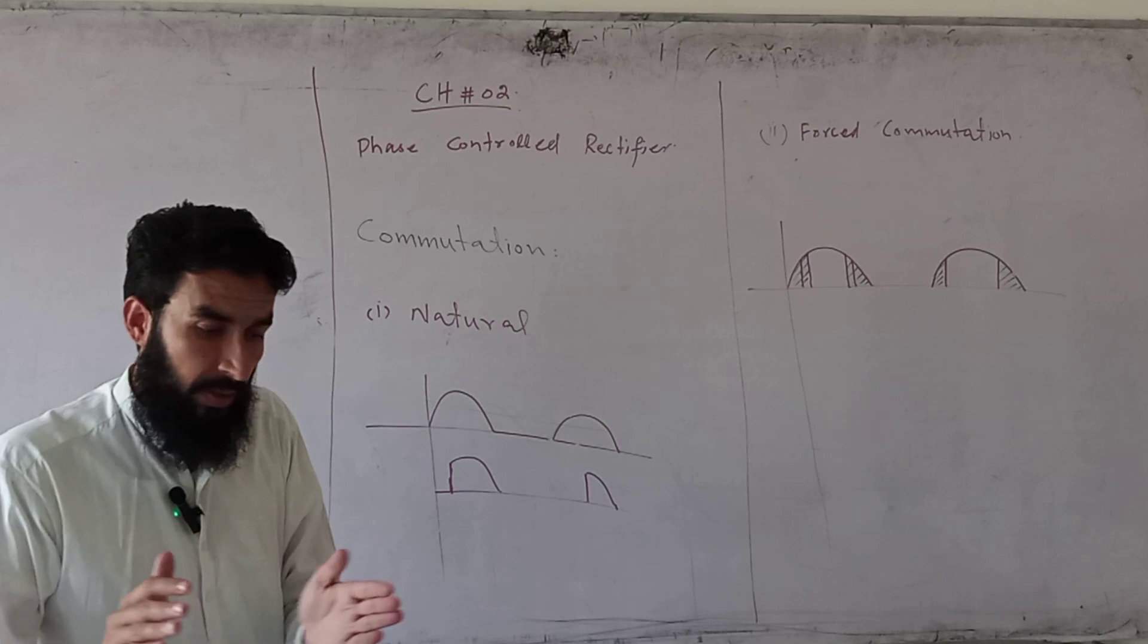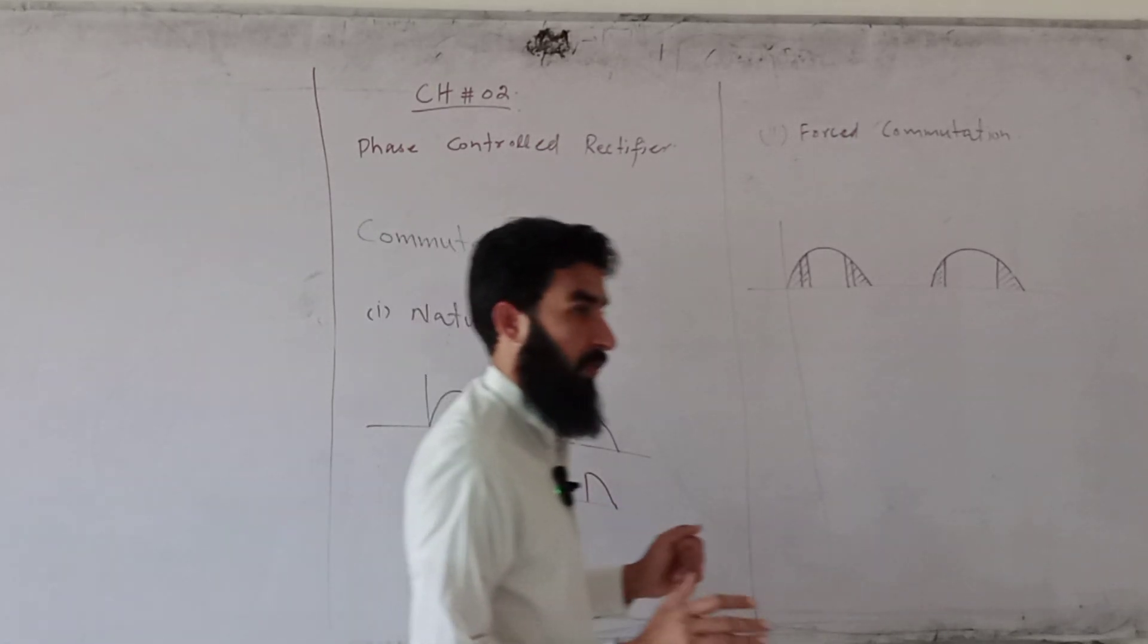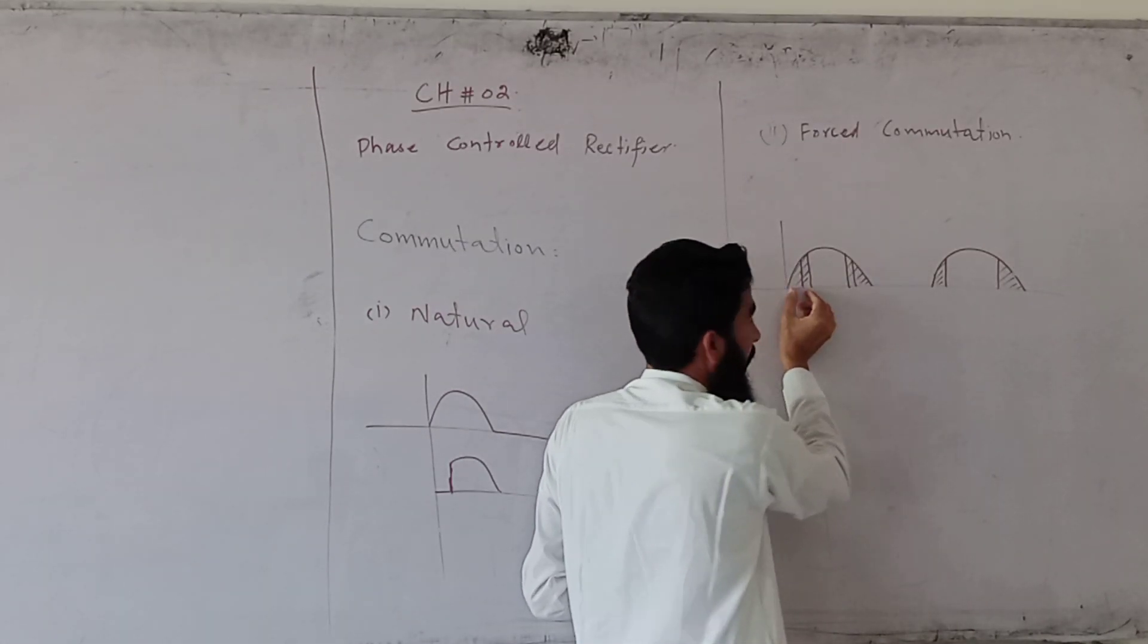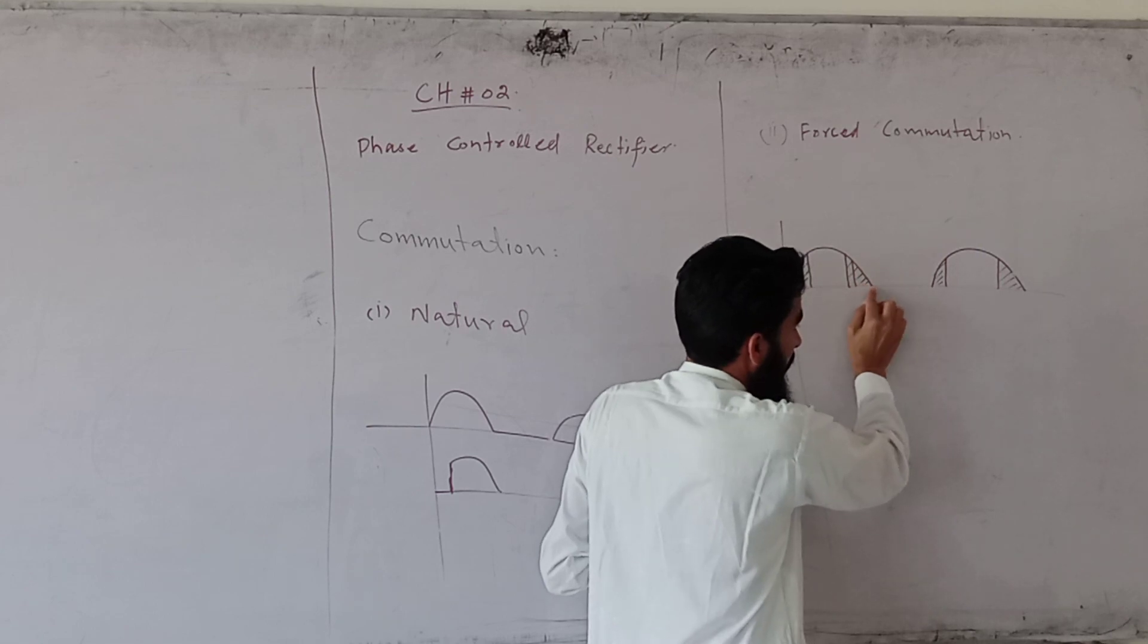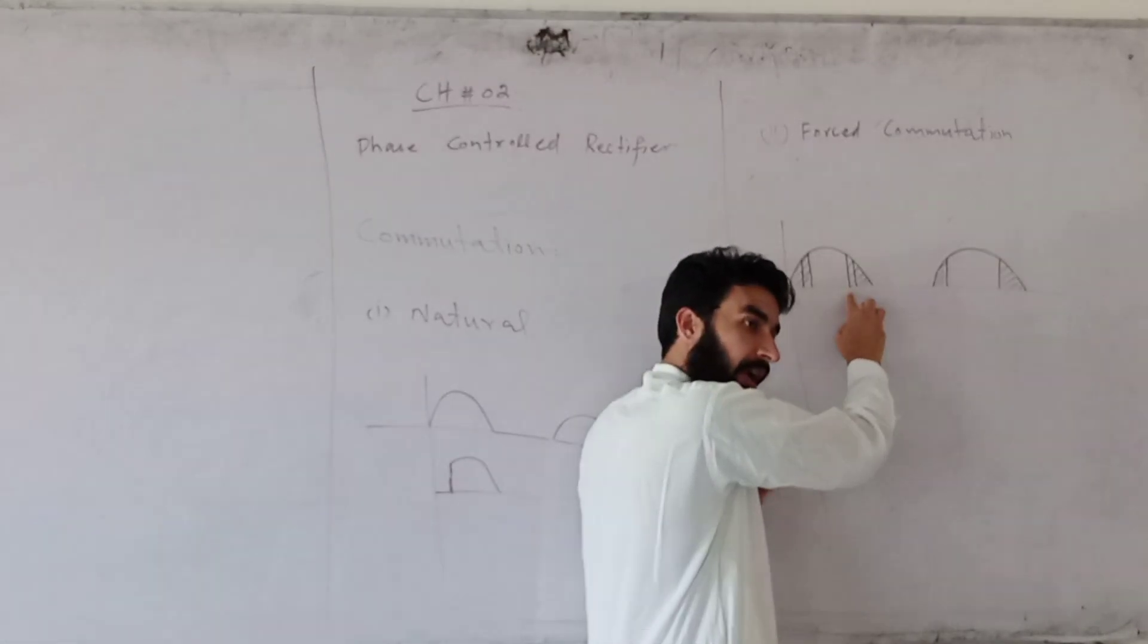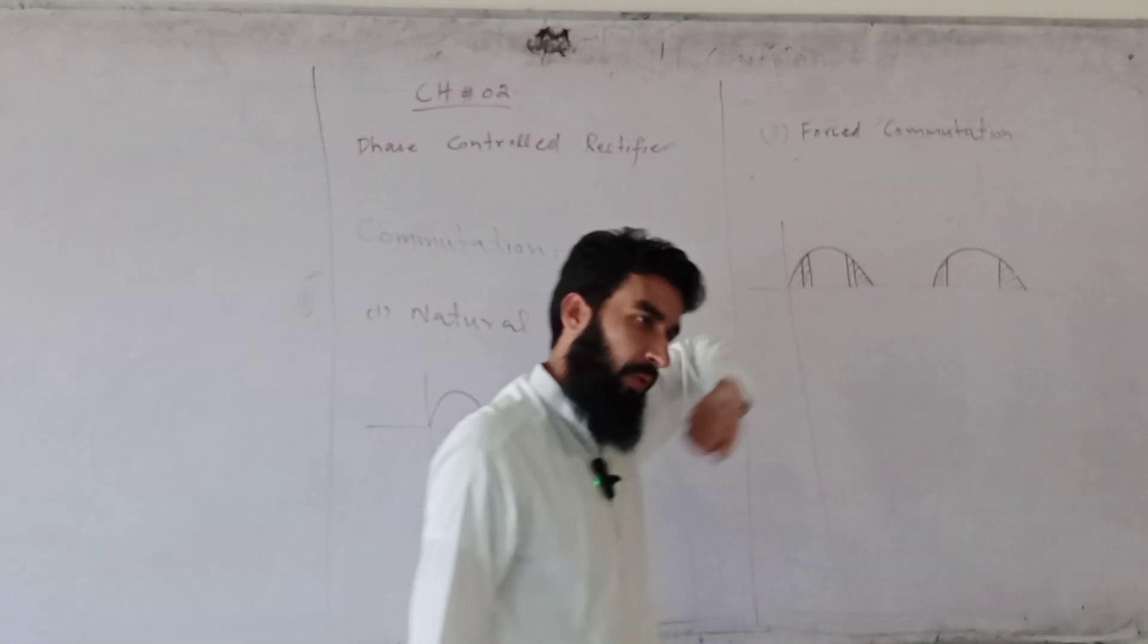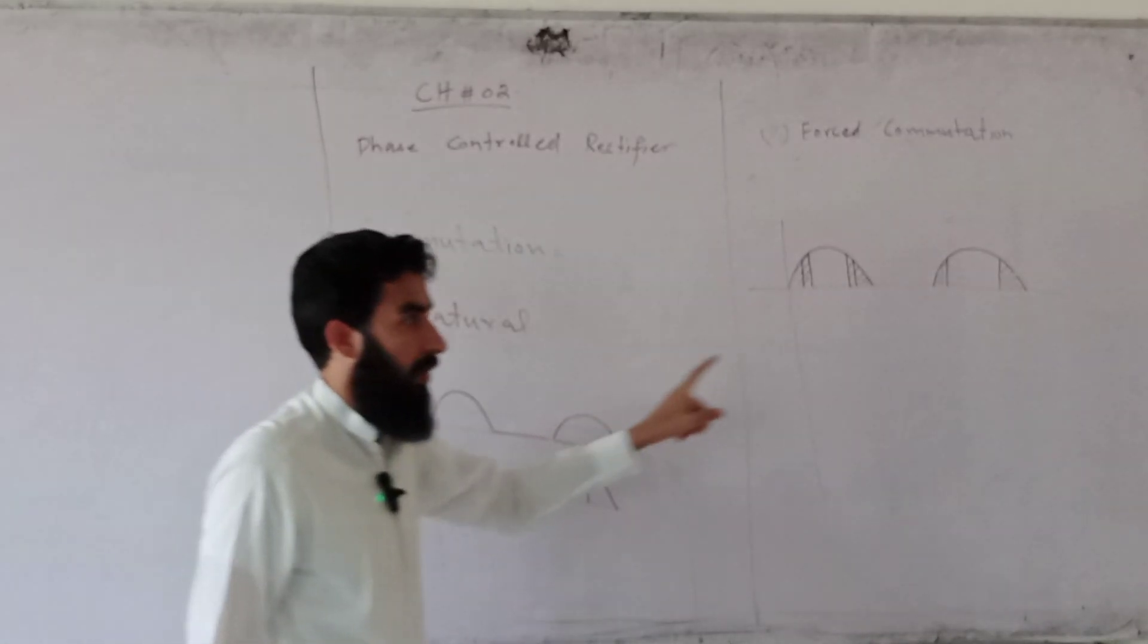Forced commutation requires a signal to block. You have to provide a control signal. If you want to control it, you need to control the angle. It will not block naturally. You need to make a signal to force the blocking. With forced commutation, you have to control it actively.